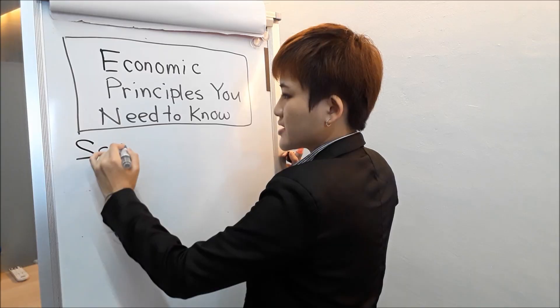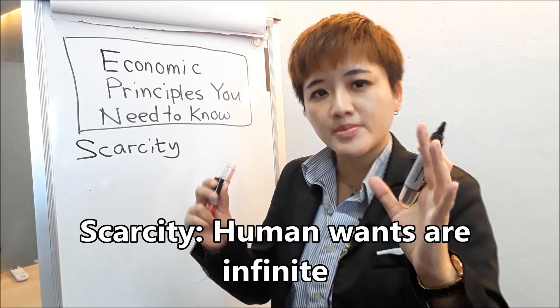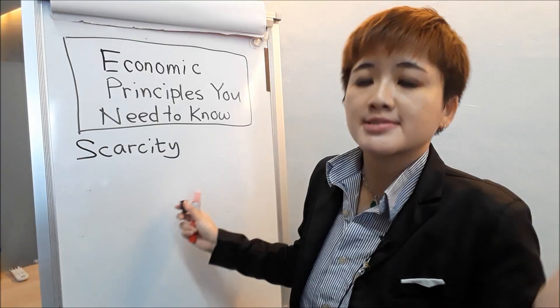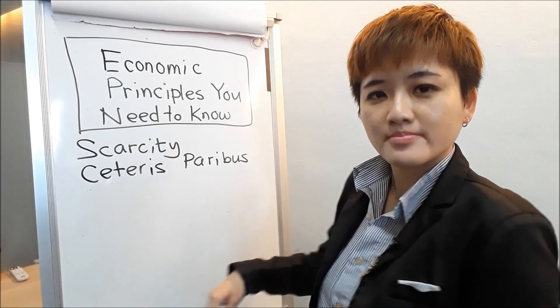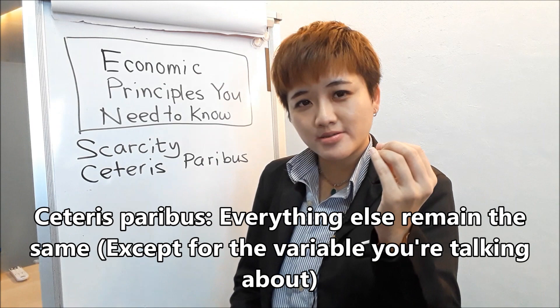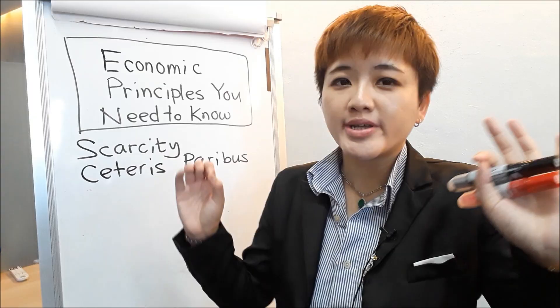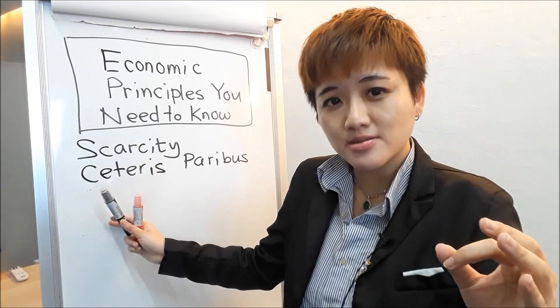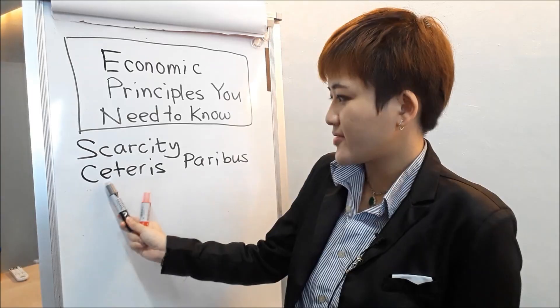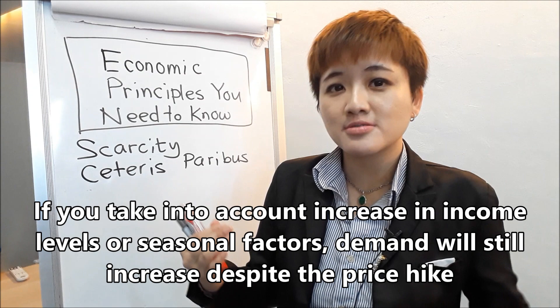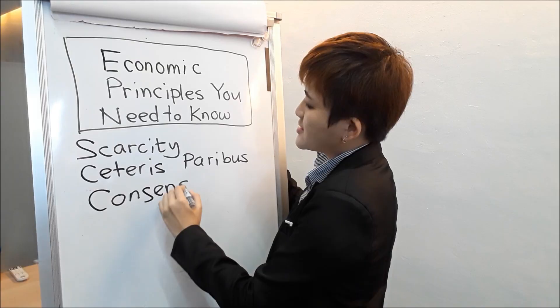There are some lingo you need to know. The first thing you'll come across is scarcity — it basically tells you that human needs are infinite. It doesn't matter how rich you are; when you have a yacht, private jet, and Lamborghini and you get sick of these things, you'll think maybe the next thing you need is a spaceship. The next term — ceteris paribus — tells you that while a certain variable changes, all other factors remain the same. For example, if we run a shop that sells hot chocolate and we decide to increase our prices, demand for our hot chocolate is going to decrease, provided everything remains the same.